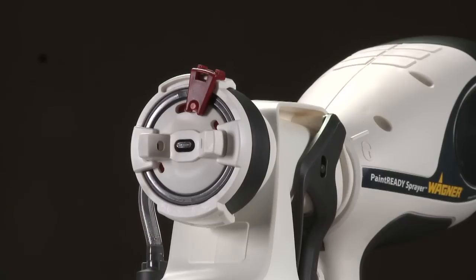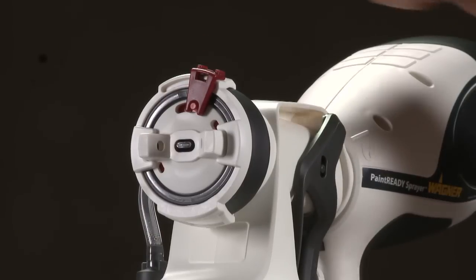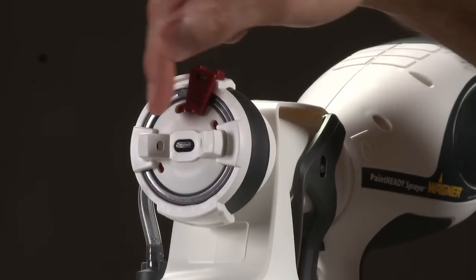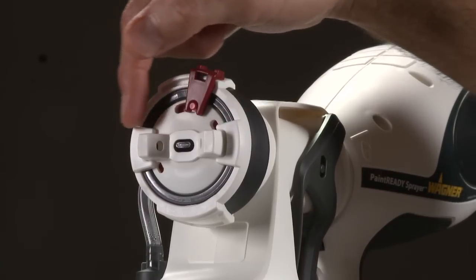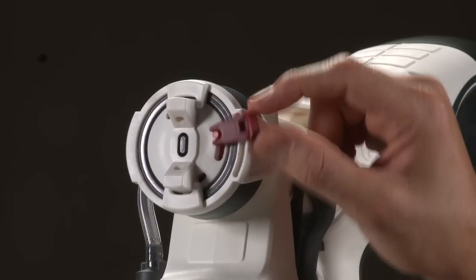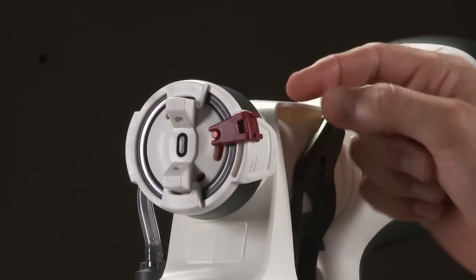The adjustment ring on your Paint Ready Sprayer determines the width and shape of the spray pattern. You can adjust the spray pattern shape by moving the air cap to either the horizontal or vertical positions, and the red spray switch can select between narrower round patterns or a wide pattern.